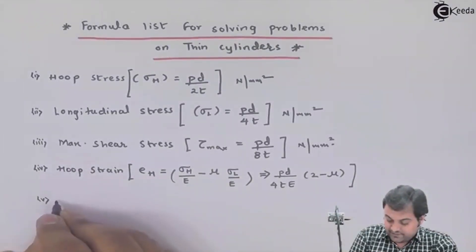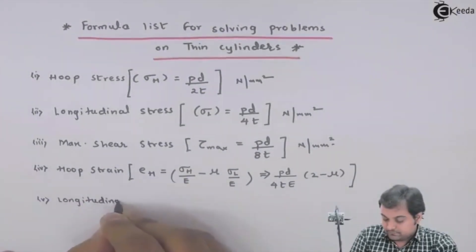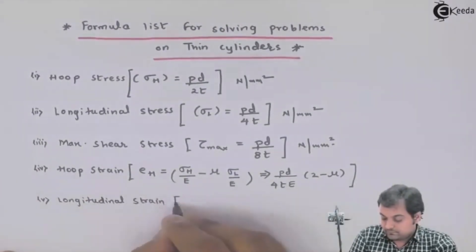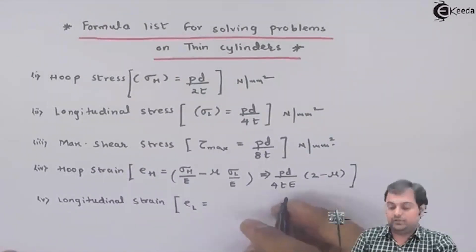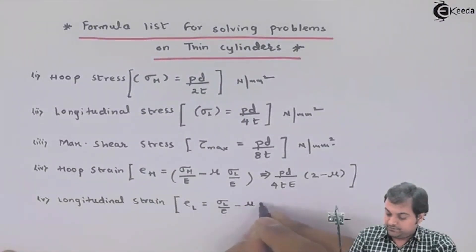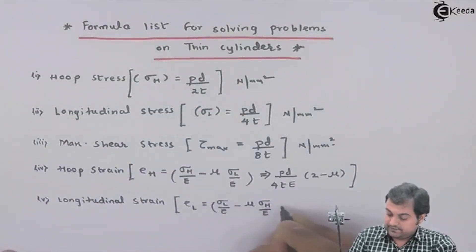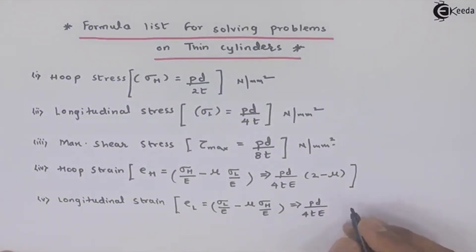Next, after this we have longitudinal strain. Epsilon suffix L equals longitudinal stress upon Young's modulus, minus mu into hoop stress upon Young's modulus, and that can be reduced to Pd upon 4tE into (1 minus 2mu).